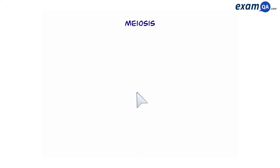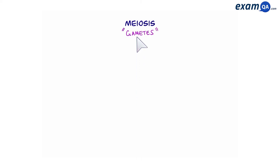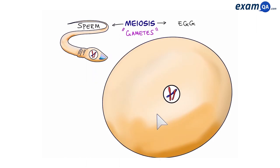The purpose of meiosis is to create gametes. These are sperm cells and egg cells. We know that these cells fuse together in a reaction called fertilization, which allows the parent's genes to continue to the next generation. Let's see how these cells are made.